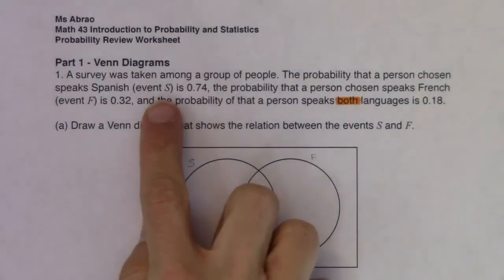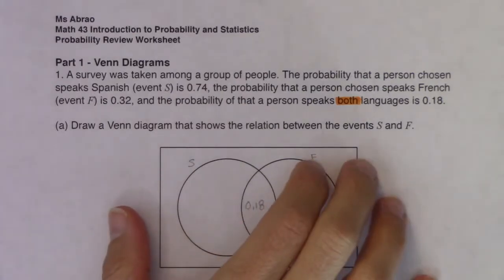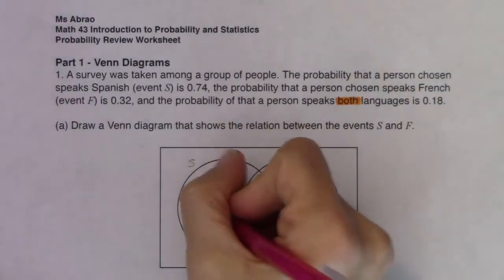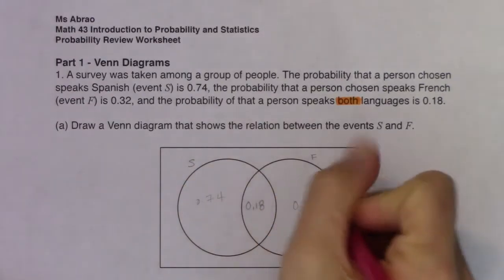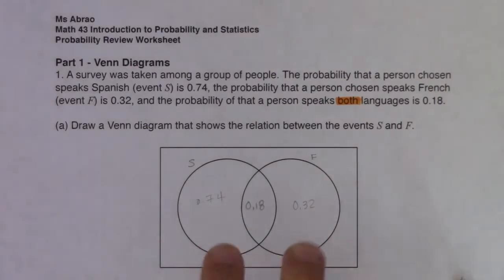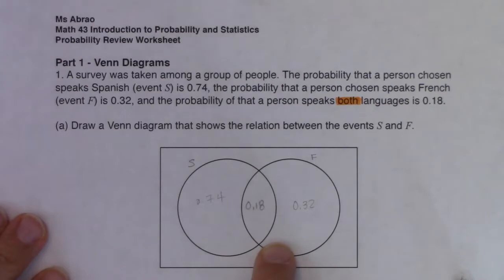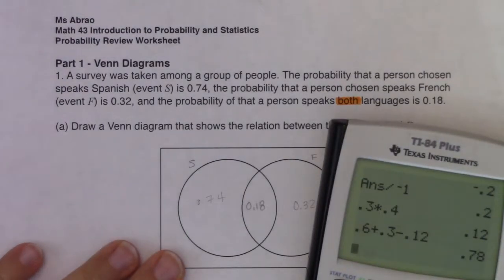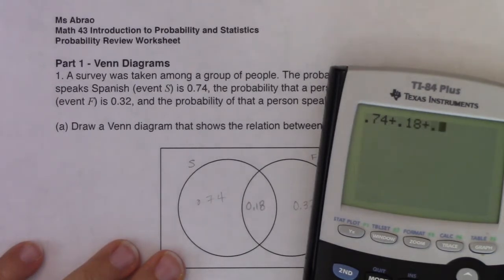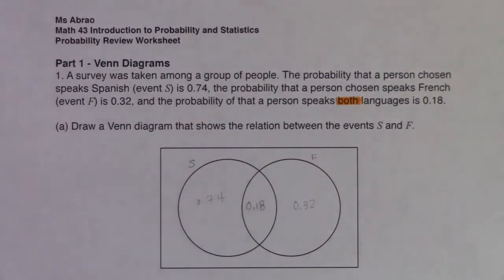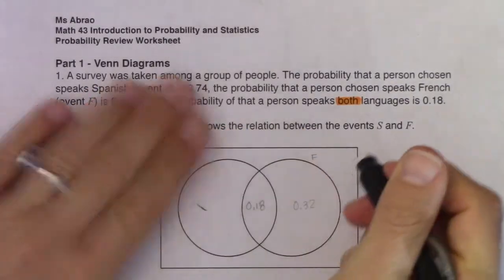Now I want to talk about a common error. Students often say the left circle gets 0.74 and the right circle gets 0.32 — but I'm sketching these lightly because this is incorrect. When 74% of folks speak Spanish, it's the entire circle that has to add up to 74%. Similarly, the entire French circle has to add up to 32%. If you just add those three numbers — 0.74 plus 0.18 plus 0.32 — you're already well over 100%, so this cannot be the correct Venn diagram.